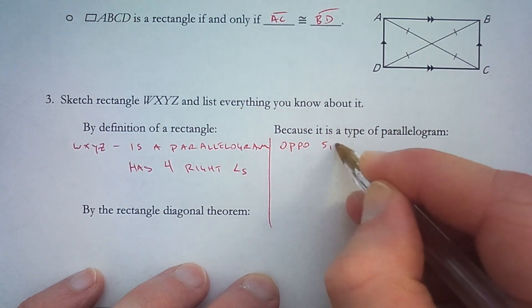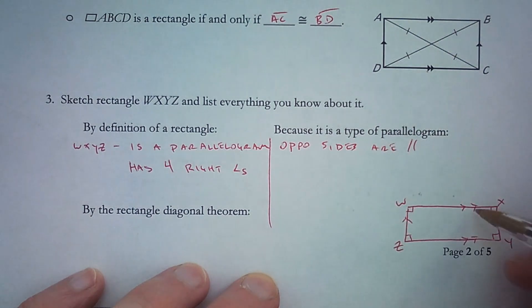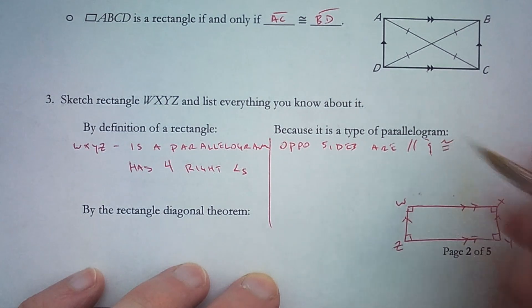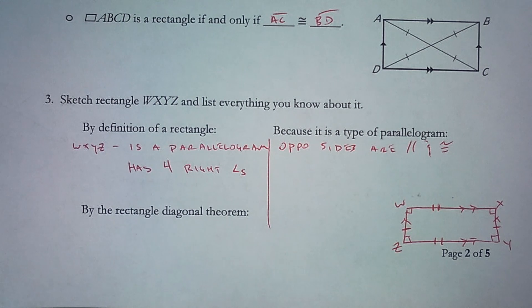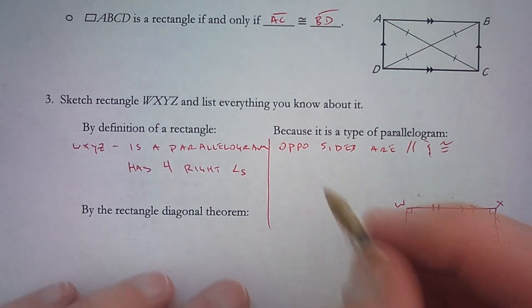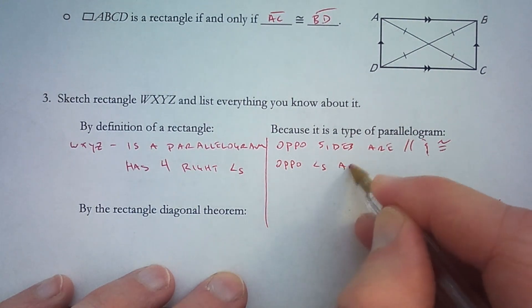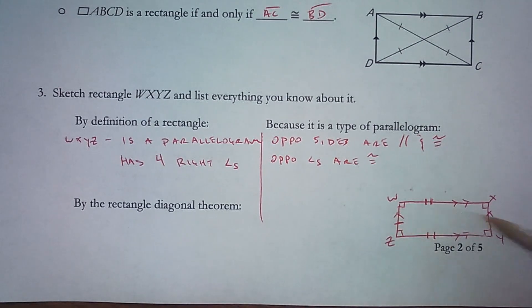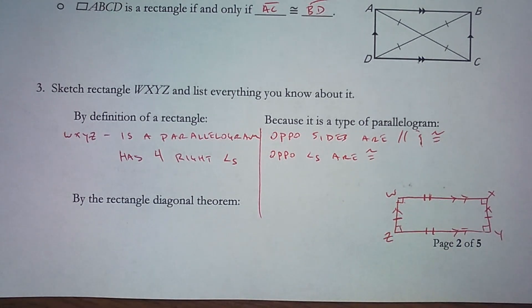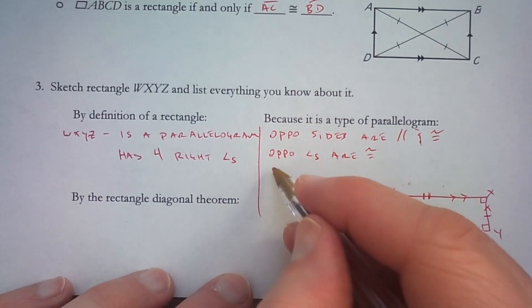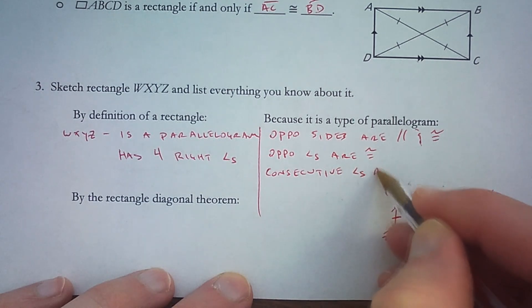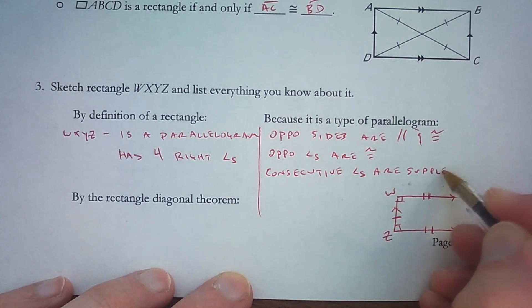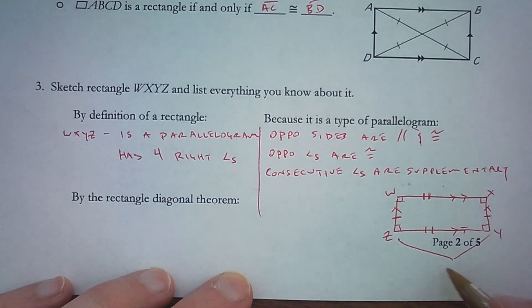Because it is a type of parallelogram, it has all the properties of a parallelogram. First, opposite sides are parallel and they are congruent — WZ and XY are congruent, and WX and ZY are congruent. Because it's a parallelogram, opposite angles are congruent, which is already reflected since all angles are 90 degrees. We also know that consecutive angles are supplementary, so any two angles next to each other must add up to 180 degrees.